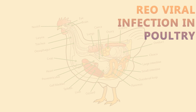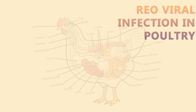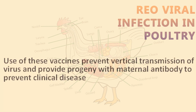Prevention and control of the disease is done through vaccination with available commercial vaccines, particularly of different strains like S1133, S1733, S2408, and S2177. Sometimes these vaccines may not work when variant viruses are present in the flock. Vaccines prevent vertical transmission from affected mothers to the chicks and provide sufficient maternal antibodies among the chicks.